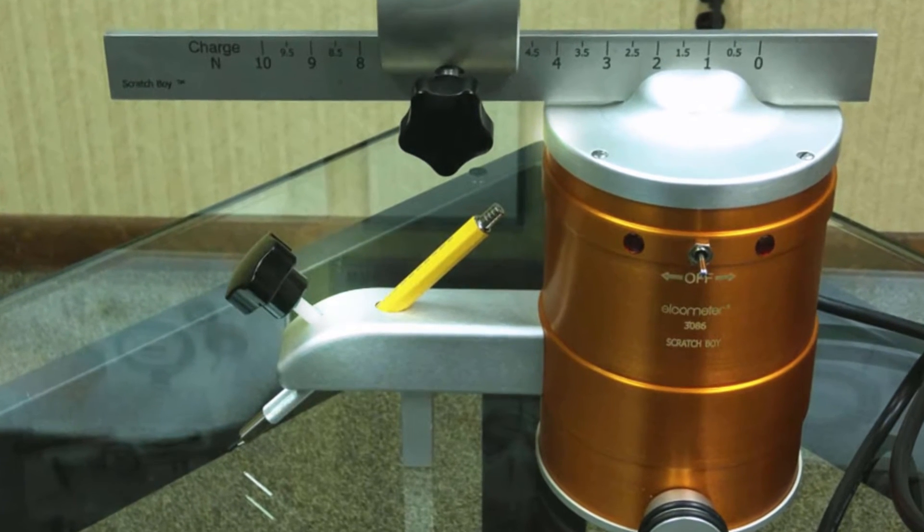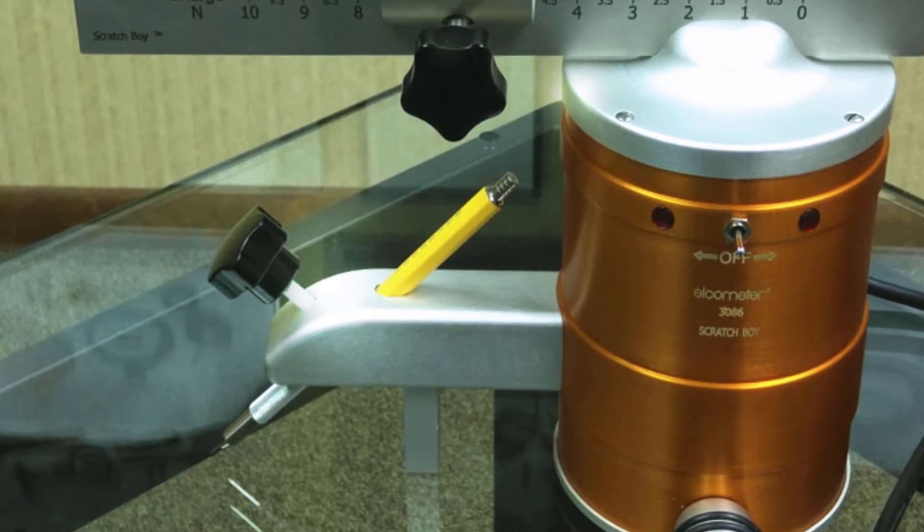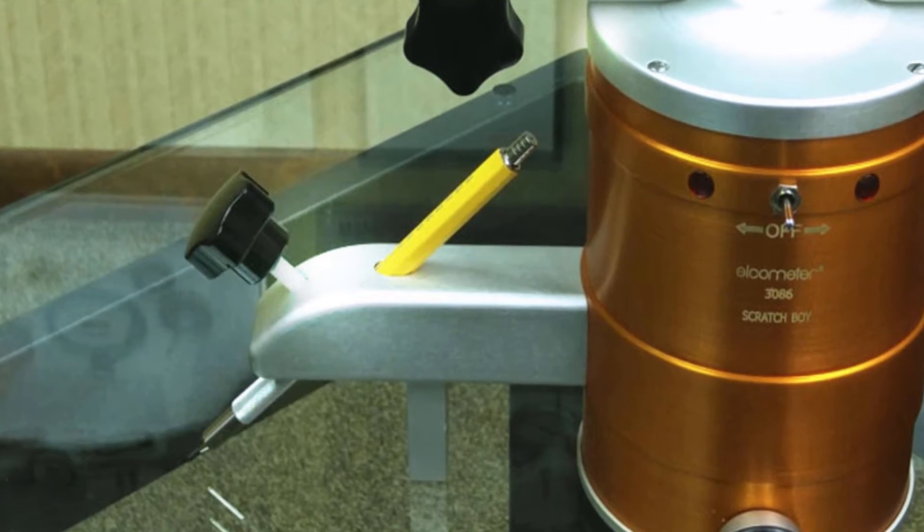Today we'll be showcasing the Elcometer 3086 motorized pencil hardness tester and how to perform a basic scratch test on a coated surface.